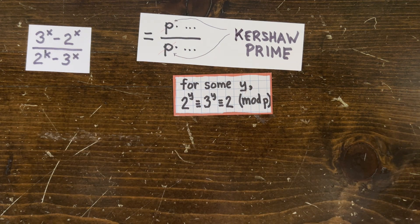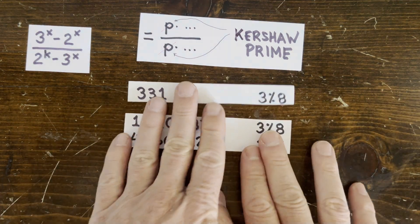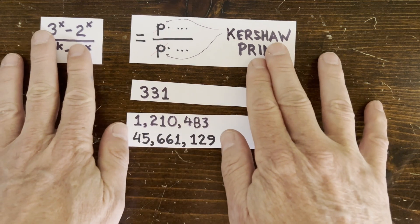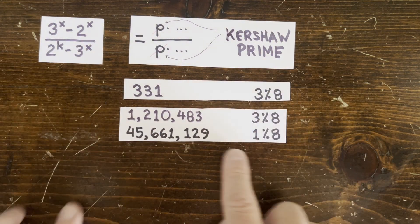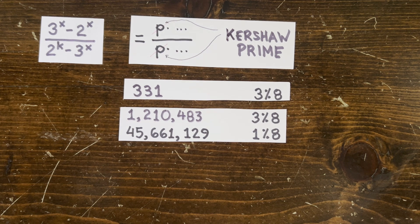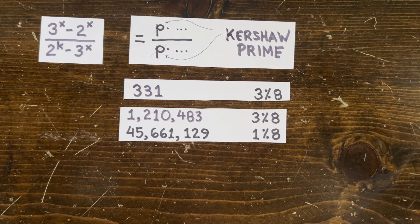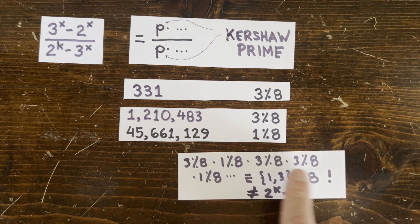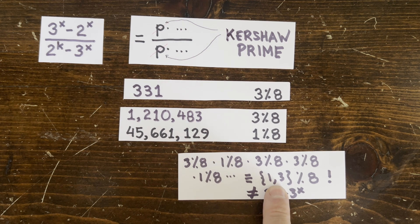So after the last video I found two more Kershaw primes using these methods. And it's really cool that all three of them are either 1 or 3 mod 8. That means no matter how many of them we multiply together the result is still going to be 1 or 3 mod 8.